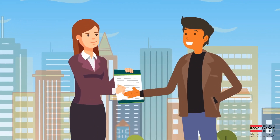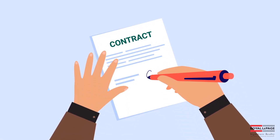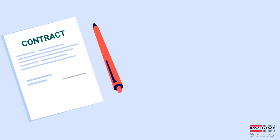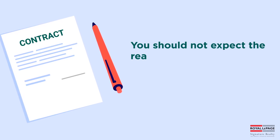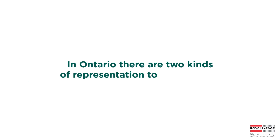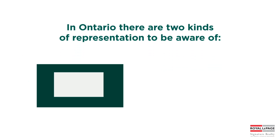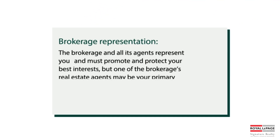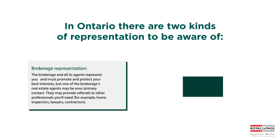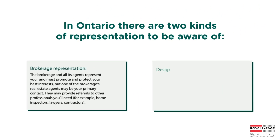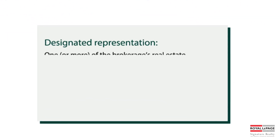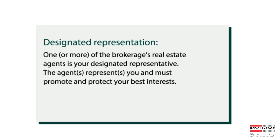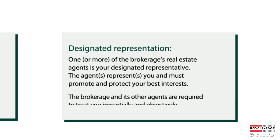When you decide to work with an agent, you become a client and will sign a representation agreement or a contract with the brokerage. If you do not want to sign an agreement, you should not expect the real estate agent to provide you with any services. In Ontario, there are two kinds of representation to be aware of. The first is brokerage representation, where the brokerage and all of its agents represent you. The second is designated representation, where one or more of the brokerage's agents is your designated representative and you are not represented by the entire brokerage.